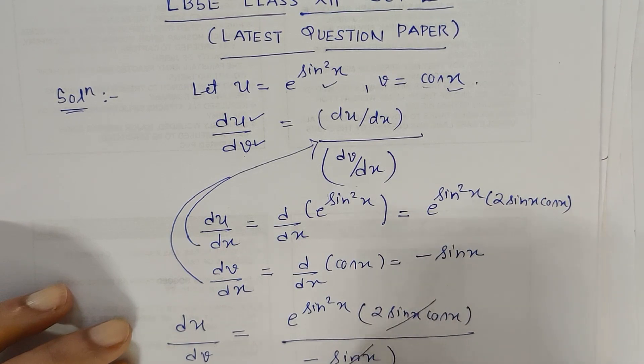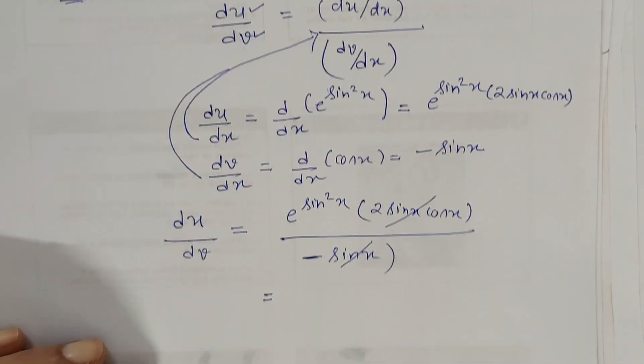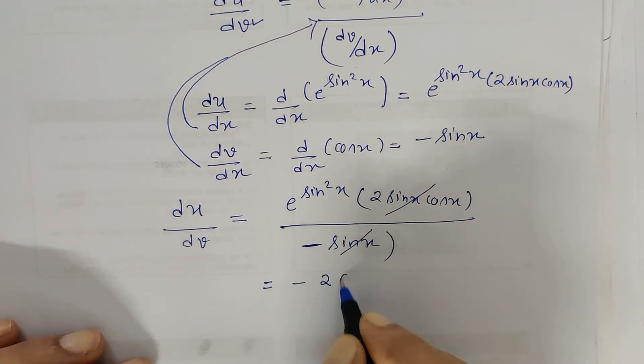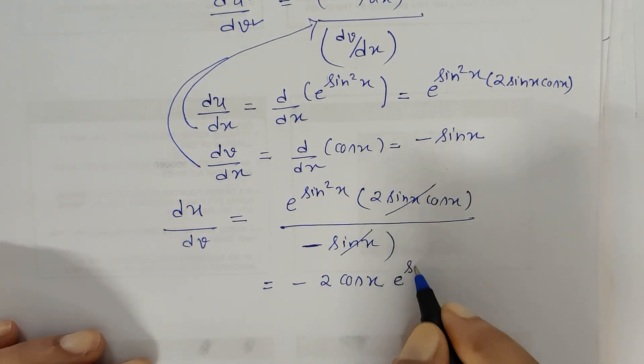So here I can see sin x and sin x can be cancelled. This negative sign always goes in the numerator and the solution to the problem is minus 2 cos x times e to the power sin squared x.